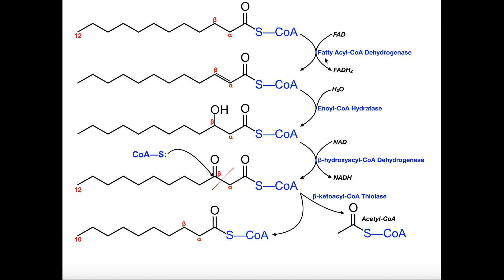The first enzyme is called fatty acyl-CoA dehydrogenase, sometimes just acyl-CoA dehydrogenase. This enzyme creates a double bond between the alpha and beta positions. The electrons are removed from the fatty acid between alpha and beta and go to FAD, so in the process of oxidizing this single bond into a double bond, we convert FAD into FADH2. This FADH2 will transfer its electrons to electron transport chain proteins to produce energy. Importantly, this double bond that's put in is always a trans double bond, not a cis double bond.